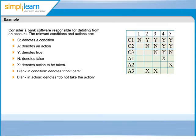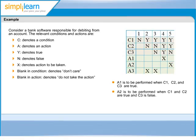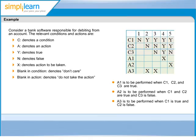Analyzing the decision table provides us the information that action A1 should be taken when all conditions C1, C2, and C3 are true. Action A2 should be performed when both C1 and C2 are true and C3 is false. Action A3 is performed when C1 is true and C2 is false. In this case, C3 will not have any effect on the action to be taken, be it true, false, or blank.